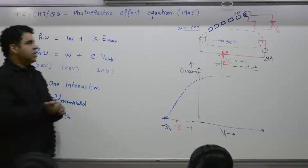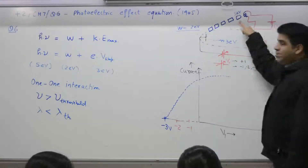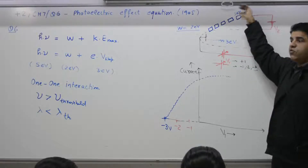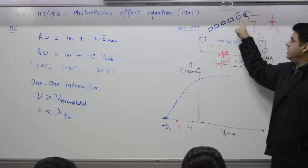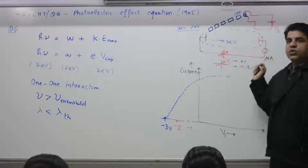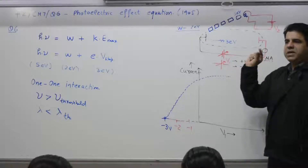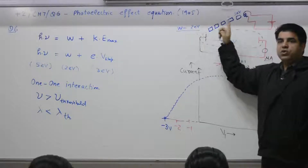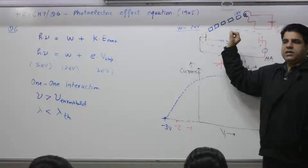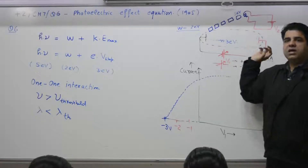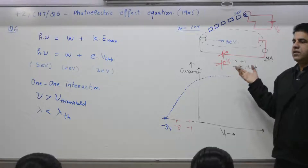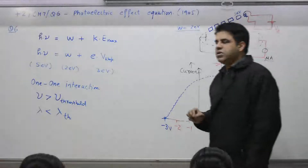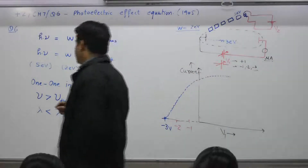That means if you use a source which emits 1.5 electron volt packets, even if you make it 1 lakh watts, even then the current is zero. Why? Each packet is 1.5 electron volts — below the work function, so no packet can eject the electron from the surface. That is why each packet should have a minimum of 2 electron volt energy.